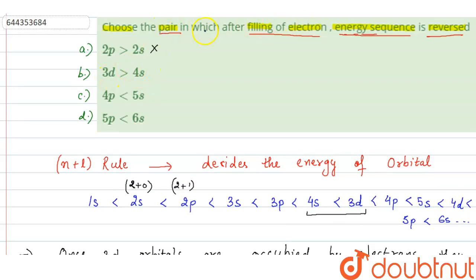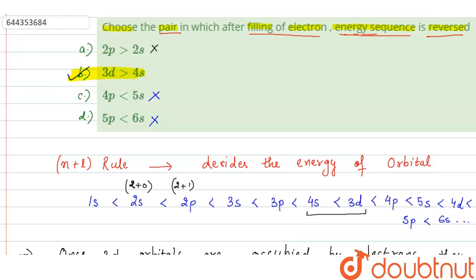So, 4S will have higher energy than 3D after filling. In this question, we have to choose the pair in which the energy sequence is reversed, so option B is the correct answer. In options C and D — 4P and 5S, and 5P and 6S — the energy order remains the same after filling of electrons. The correct answer is option B: 3D greater than 4S.